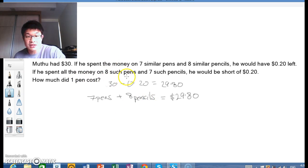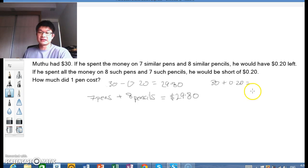Similarly, if he used all this money on 8 such pens and 7 such pencils, he would be short of $0.20. Well, that would mean that 8 pens plus 7 pencils cost $30 plus $0.20, because he is short of $0.20, so he needs to pay $30.20.